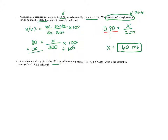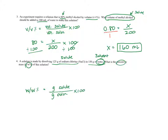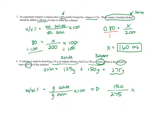Problem four: A solution is made by adding 125 grams of sodium chloride and 150 grams of water. What is the percent weight over weight (w/w) of this solution? Water is the universal solvent, so sodium chloride is the solute. The formula is grams of solute over grams of solution times 100. The solute is 125 grams, but the solution must come from solute plus solvent: 125 plus 150 equals 275 grams. So we do 125 divided by 275 times 100, and get about 45%.